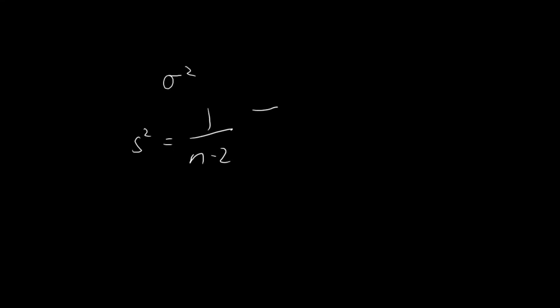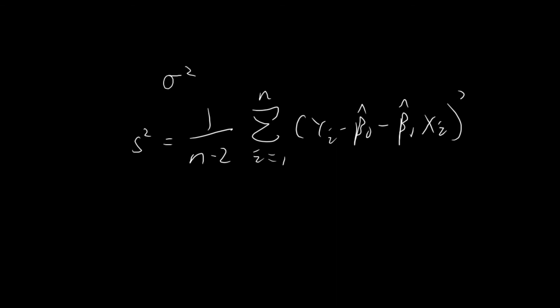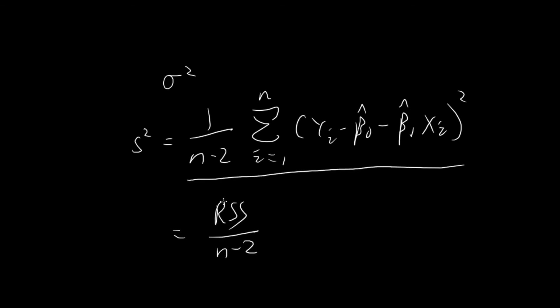One last thing to mention: recall from a previous video that I considered the unbiased estimator for the parameter σ². The unbiased estimator was called s², given by a specific formula. The summation term in that formula is really just the residual sum of squares. So we can rewrite that estimator as RSS divided by n − 2. All I'm trying to say is that you can express the estimator s² in terms of the RSS, and this is something you should take note of.